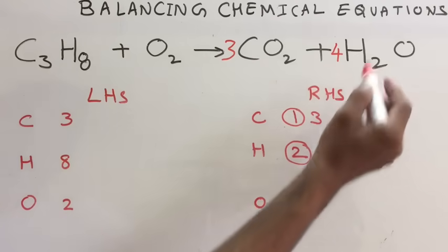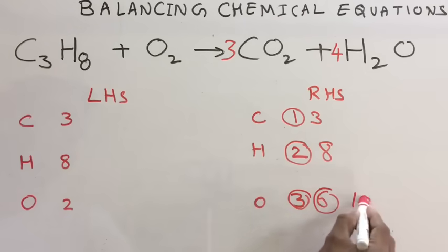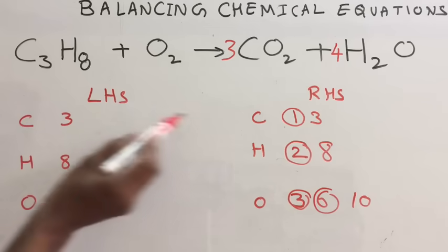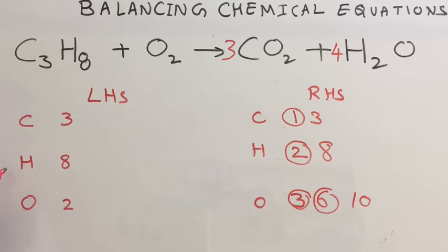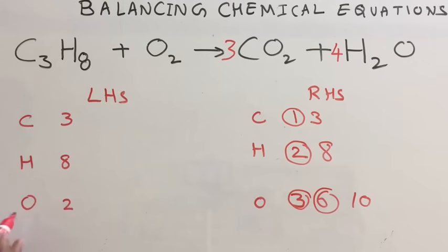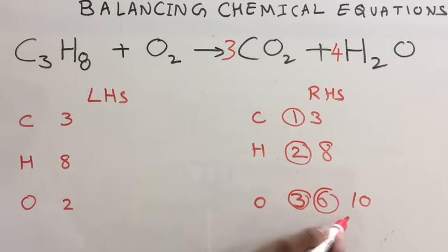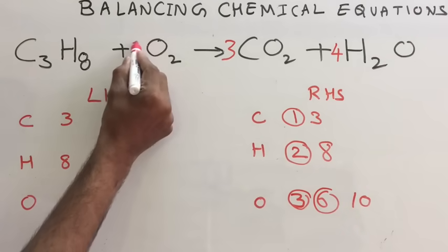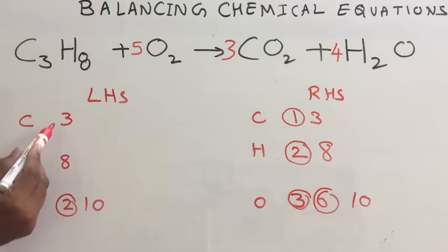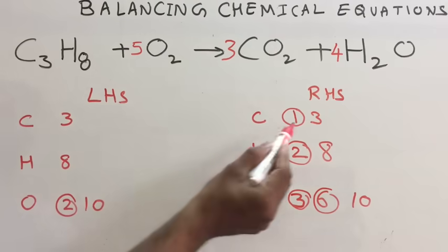You already have six oxygen here and now four more, making a total of ten. Comparing: carbon — three on LHS, three on RHS, balanced. Hydrogen — eight on LHS, eight on RHS, balanced. Oxygen — two on LHS, ten on RHS, so multiply with five. Five twos are ten. Check: three, eight, ten on both sides — the equation is balanced.